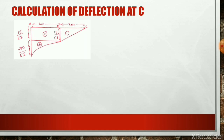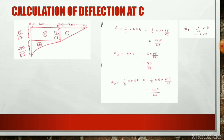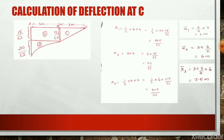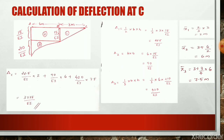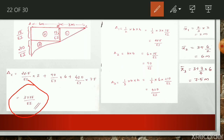Similarly, to find the deflection at C we need the centroidal distances X̄1, X̄2, and X̄3 measured from C. For part 1 (triangle), X̄1 = 2/3 × 3 from C; for part 2 (rectangle), X̄2 = 3 + 6/2 from C; and for part 3 (parabola), X̄3 = 3 + (3/4 × 6) from C. The deflection delta_C = A1×X̄1 + A2×X̄2 + A3×X̄3, which gives delta_C = 3735/EI.